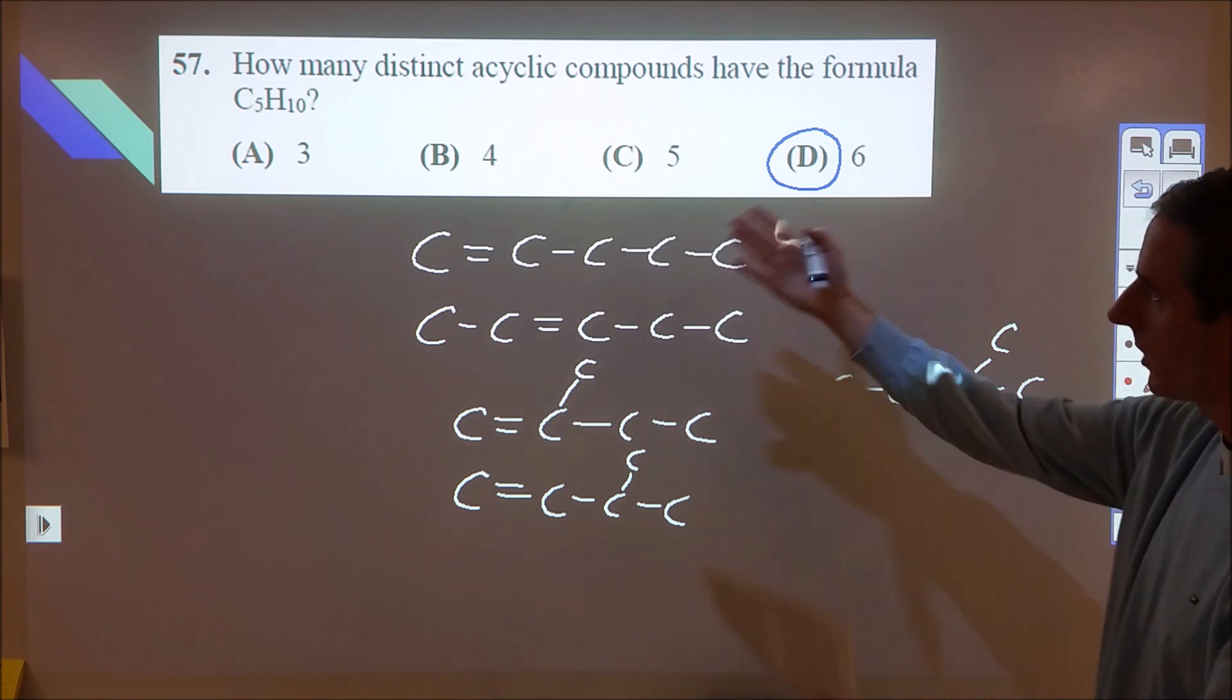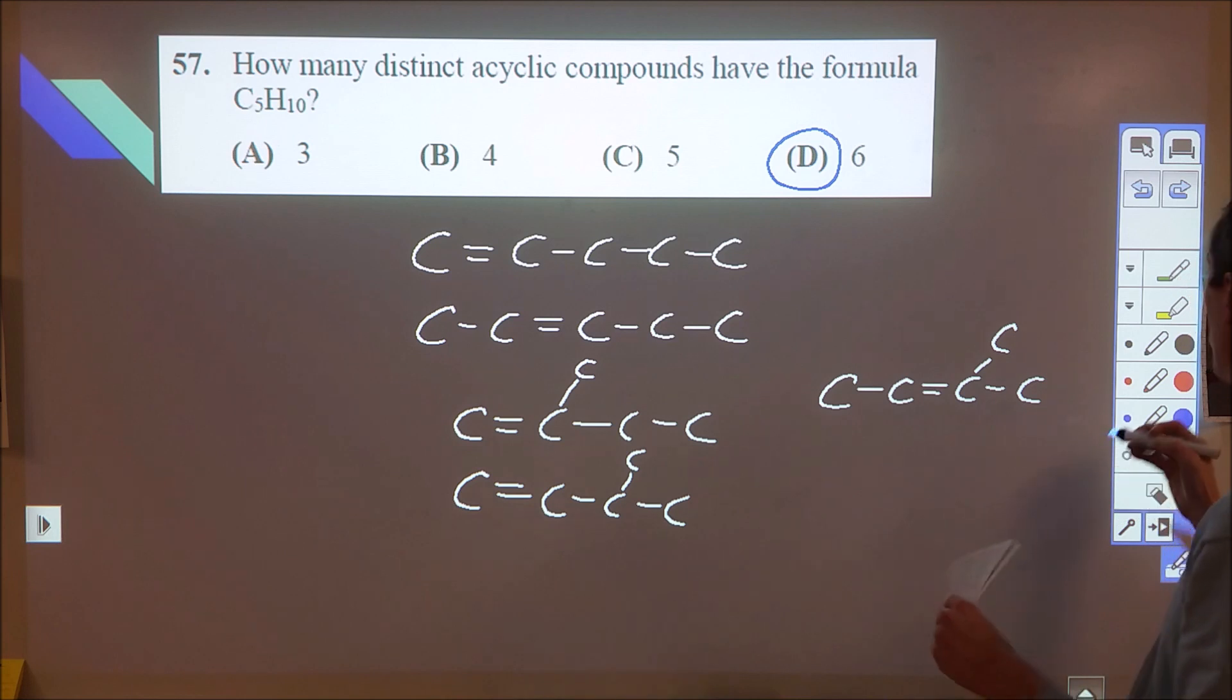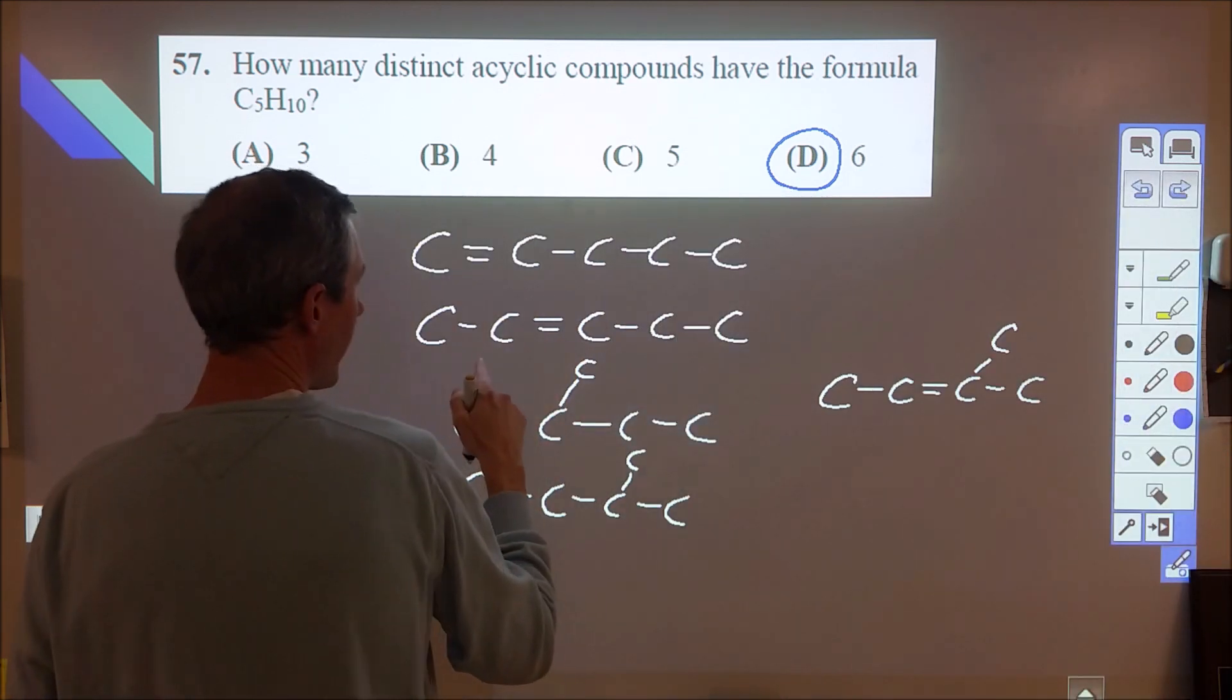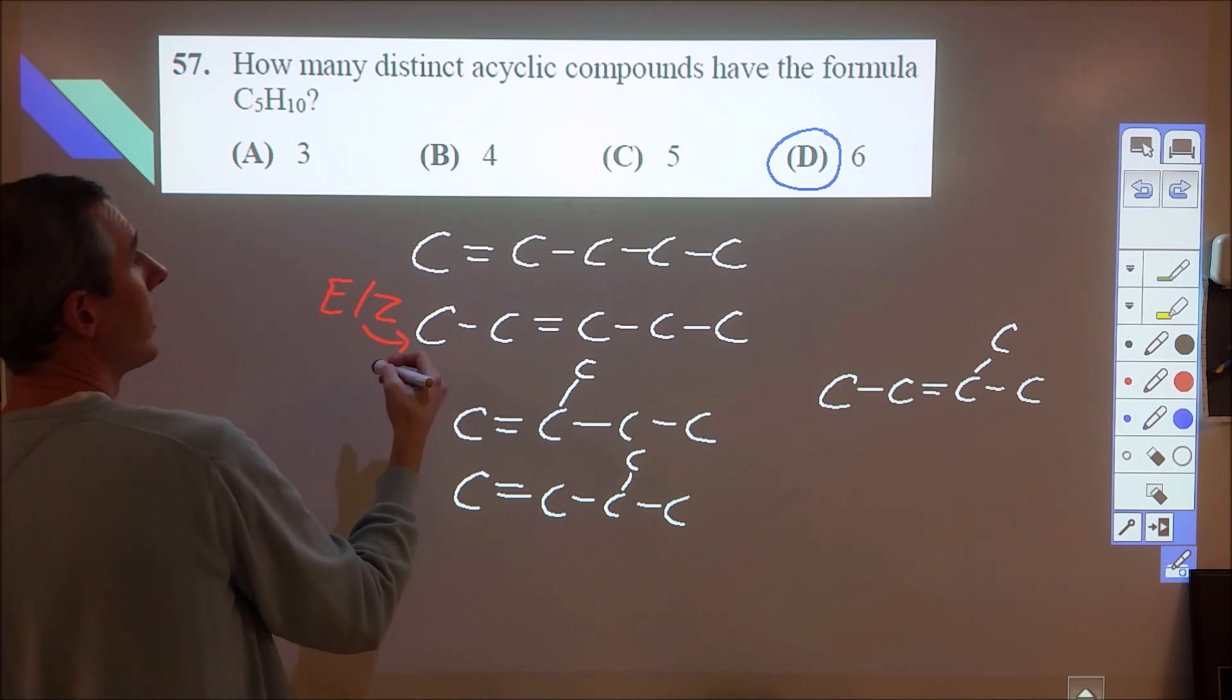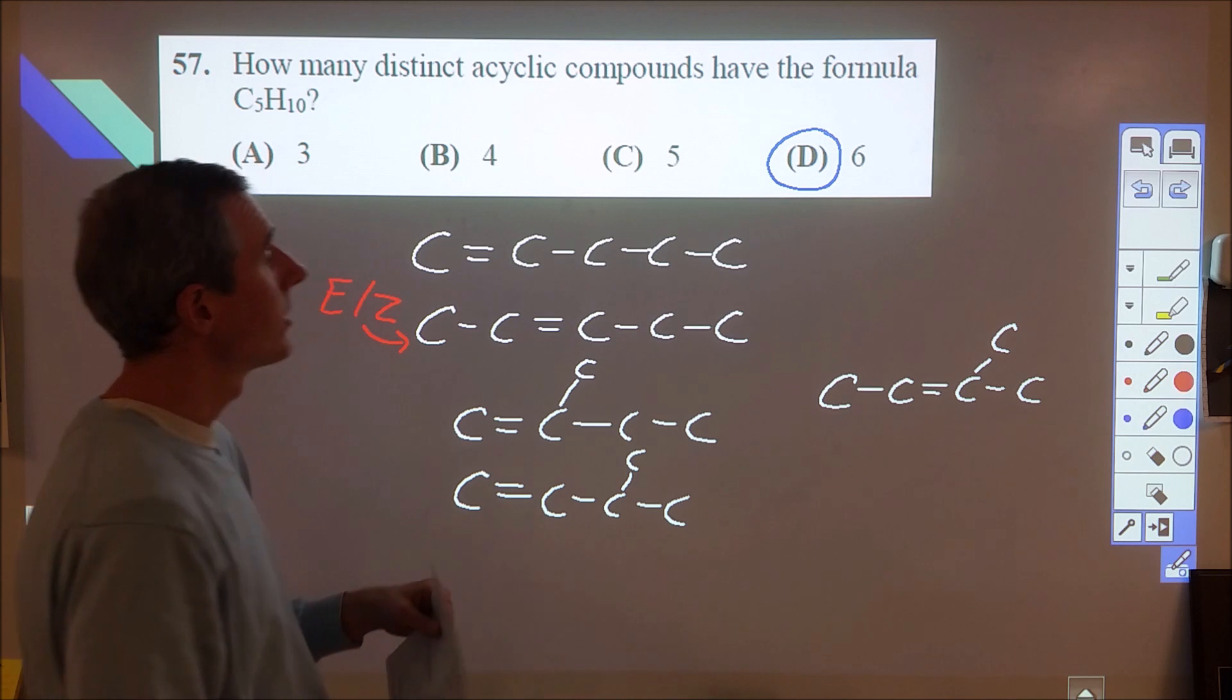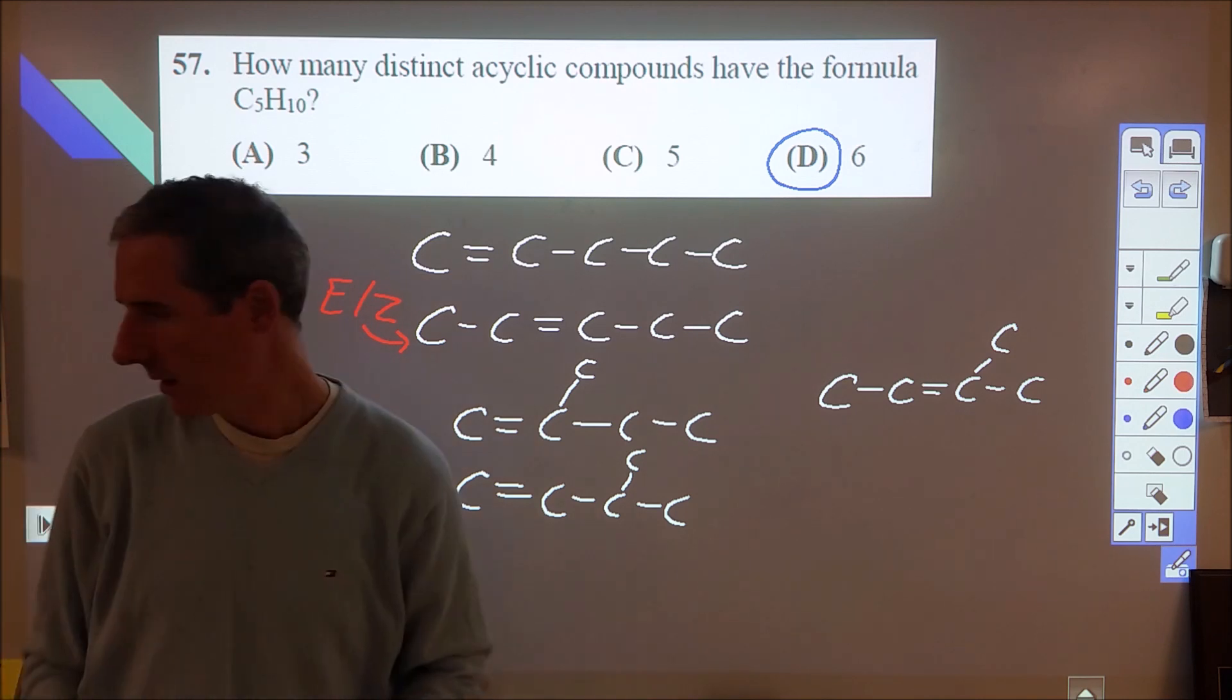So obviously a cyclic compound would give us C5H10, but they say acyclic. And they say distinct, which I think is vague and ambiguous on purpose. And what they're getting at is that this one here can be both the E or the Z or the cis or the trans form. And so this one is two isomers rather than one, and that prompts us from going from five isomers to six. So they are counting the stereoisomer as a distinct isomer because the E and the Z form are so locked in and different.